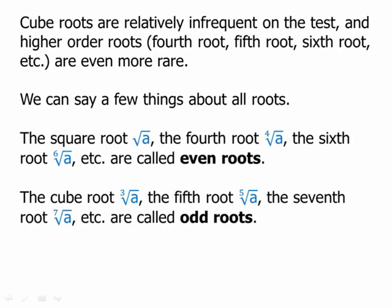The square root, 4th root, 6th root, etc. are called even roots — when we have an even number written there, it's an even root, and with a square root there's an implied 2. The cube root, 5th root, 7th root are called odd roots. The same positive and negative behavior we discussed with squares and cubes extends to all evens and odds: we can take any even root of a positive number resulting in a positive output, but we cannot take an even root of a negative number — it is undefined.